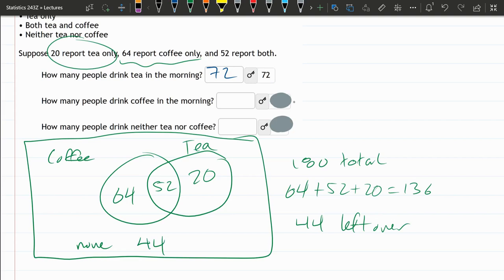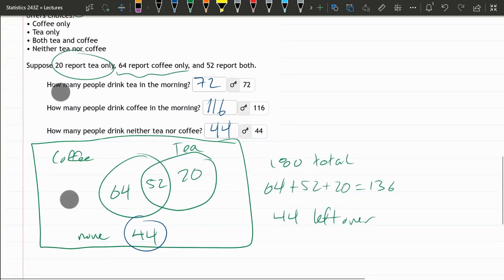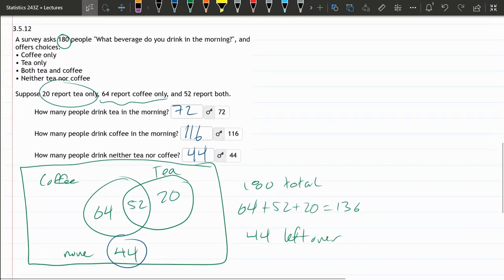How many people drink coffee in the morning? Really similar, except you're adding those two numbers together. How many people drink neither tea nor coffee? That's that none that we just computed, 44. And that will be all we need to do for this chart.